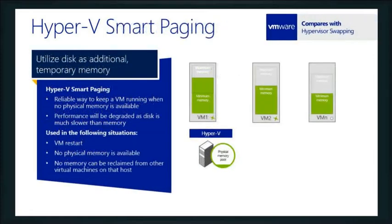Smart paging is all about when to use memory versus actual hard drive space. There are times when a virtual machine has been given a certain amount of RAM and isn't using it, but there might be requests that need to leverage that RAM. Hyper-V can move it down to page file or disk while that request is being used, and the minute the VM says it needs that memory back, it's given back. That's very similar to what hypervisor swapping does for VMware.